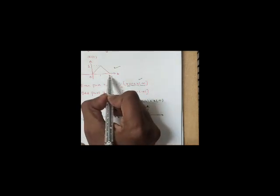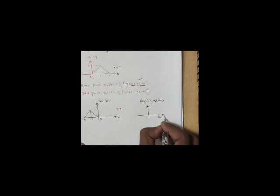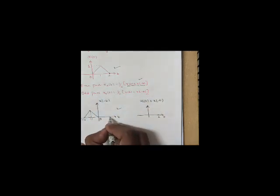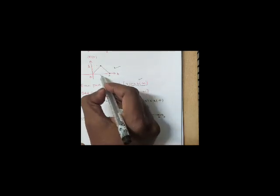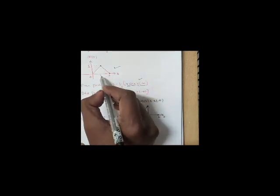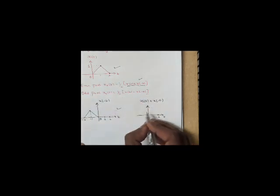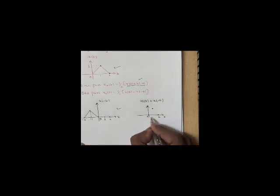I am going to add these two signals. At t=2, x(t) has amplitude 0 and x(-t) has amplitude 0, so I get 0. At t=1, x(t) has amplitude 1 and x(-t) has amplitude 0, so adding gives 1. At t=0, both x(t) and x(-t) have amplitude 0, so I get 0.